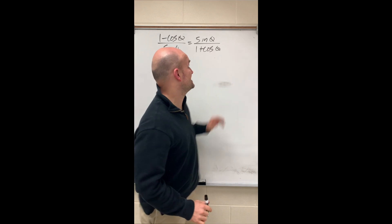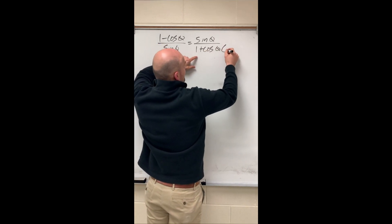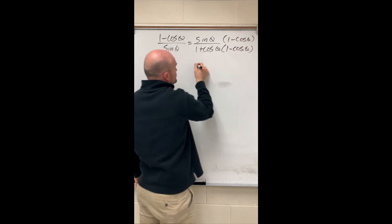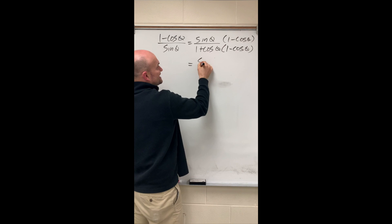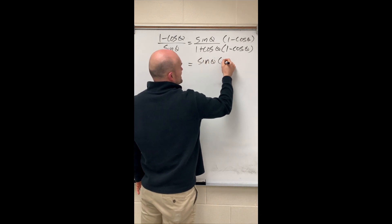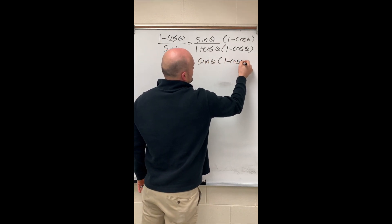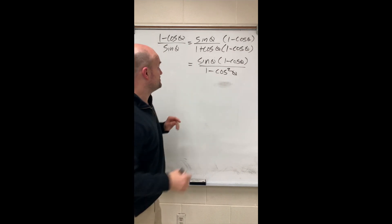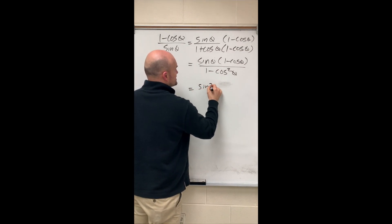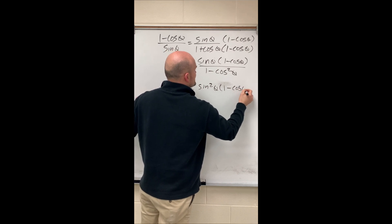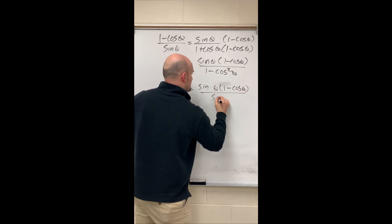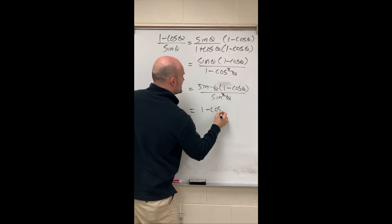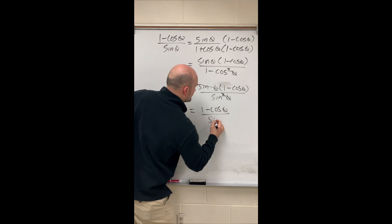In this identity, we're actually going to work on the right-hand side. I want to get the 1 plus cosine of theta off the denominator, so I'm going to multiply by 1 minus cosine of theta. That's going to create a Pythagorean identity in my denominator — giving me sine squared. In the numerator that's going to remain the same. Here I get 1 minus cosine squared of theta, which is my sine squared. When I get sine squared in the denominator, I can divide out the sine squareds, leaving me with 1 minus cosine of theta all over sine of theta.